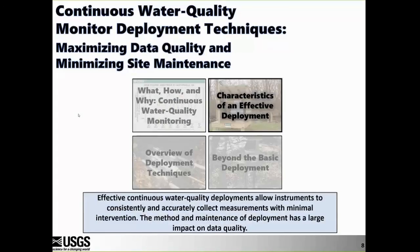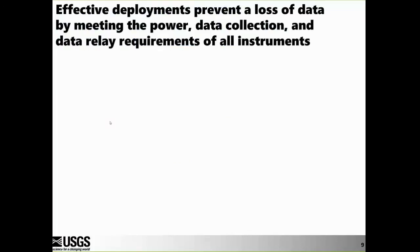What is an effective deployment? First, an effective continuous water quality deployment prevents a loss of data by meeting the power, data collection, and data relay requirements of all the instrumentation deployed in stream.